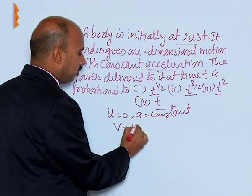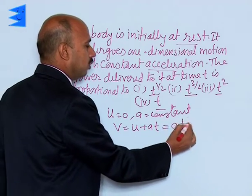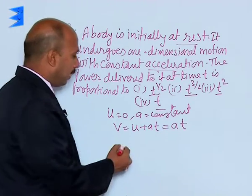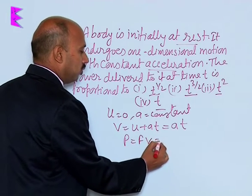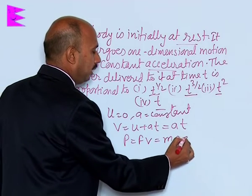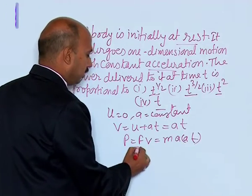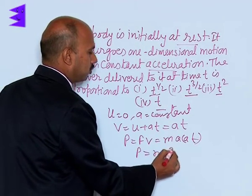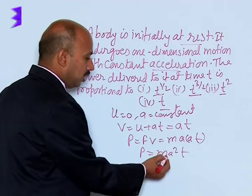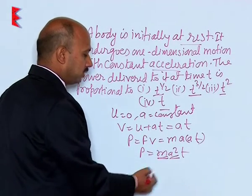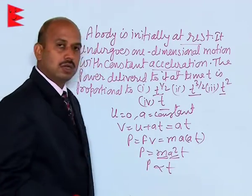So, you can write v = u + at, which equals just a·t. Power is equal to force into velocity, so you can write m·a·(a·t), which gives power = m·a²·t. Now, m is constant and a is constant, therefore power is directly proportional to t.